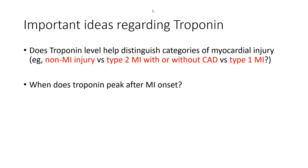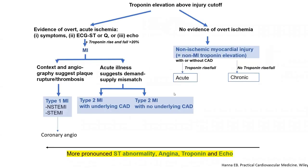Does troponin level help distinguish the four major categories of myocardial injury, and when does troponin peak after MI onset? A lot of fellows somehow don't know the answer to that question. So first, before I detail the troponin, I want to quickly remind you of the four major categories of myocardial injuries.